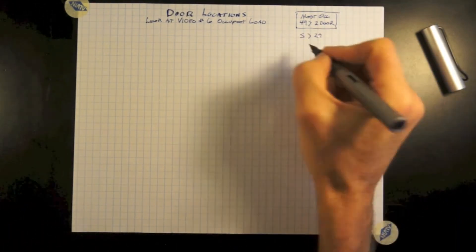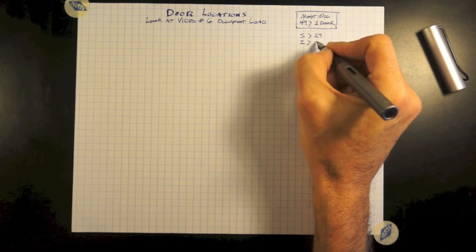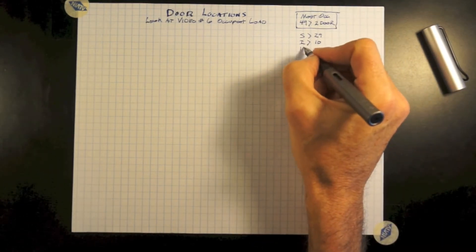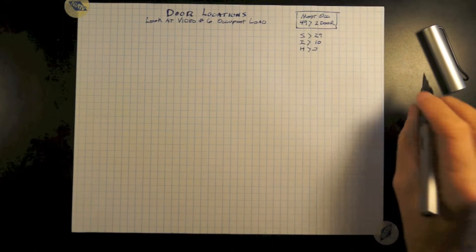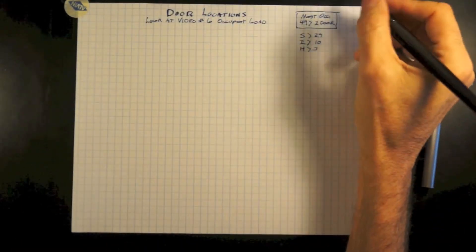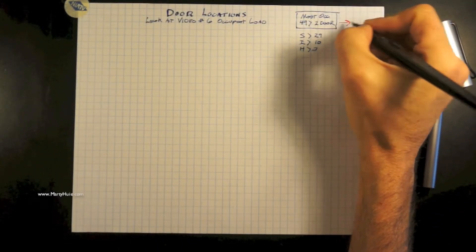For storage, it's 29. For most I occupancies, it's around 10. And for H hazard, it is three persons will require more than one door exiting the space.